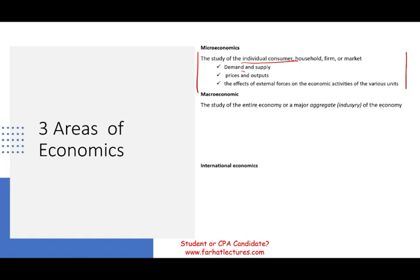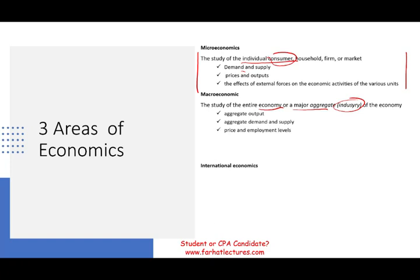Macroeconomics is the study of the entire economy or major aggregates of it — basically an industry or the whole economy. Here you are looking at aggregate output, the total output, not one thing at a time. Also covered are aggregate demand and supply versus demand or supply for a specific consumer or household, prices and employment levels on a national level, national income, government policies, regulation, and similar factors.